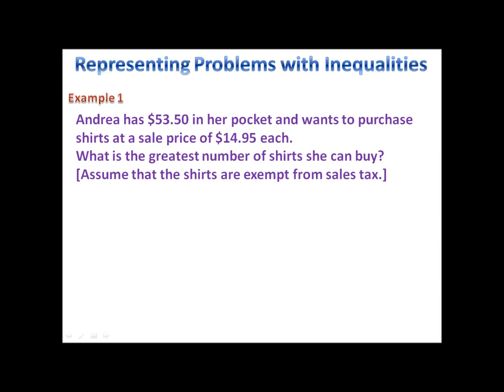In example one, Andrea has $53.50. She wants to purchase some shirts that she found on sale for $14.95. How many shirts can she buy? Well, here's what we know. The amount of shirts, whatever they cost, has to be less than or equal to $53.50. She cannot spend more than $53.50 because that's all the money she has in her pocket. She could spend less than that amount or she could spend exactly that amount.